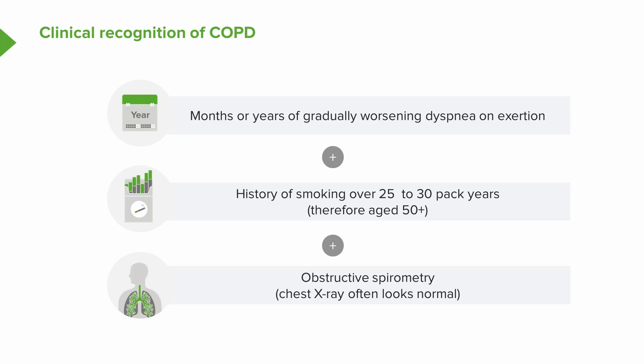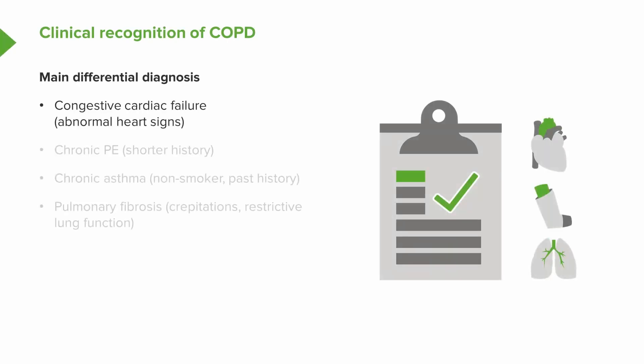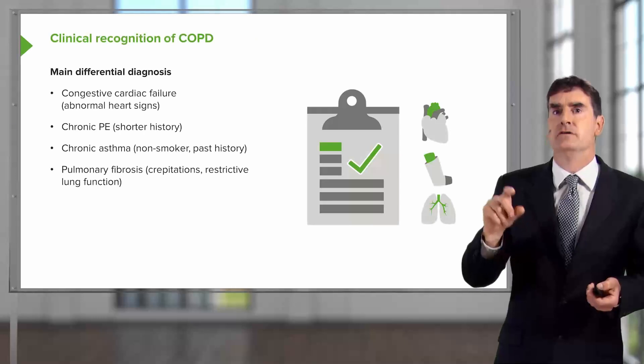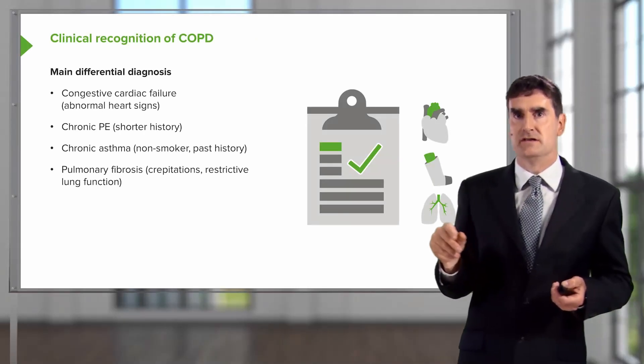The chest X-ray often looks normal. The main differential diagnosis is congestive cardiac failure. Chronic PEs will have a shorter history and an abnormal transfer factor, and importantly the lung volumes and spirometry will be normal. Chronic asthma: there's no history of smoking and there's usually a past history of asthma. And pulmonary fibrosis — crackles are important here, because if you hear crackles, that's not due to COPD. In addition, the lung function pattern with pulmonary fibrosis is different: it's a restrictive pattern with an increased FEV1 to FVC ratio and usually a fall in transfer factor as well.